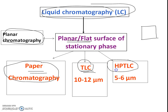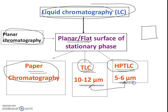Thin layer chromatography and high performance thin layer chromatography are differentiated on the basis of the particle size of the adsorbent. In TLC, the particle size of the adsorbent used is 10 to 12 micrometers, whereas in HPTLC the particle size is smaller, at 5 to 6 micrometers.